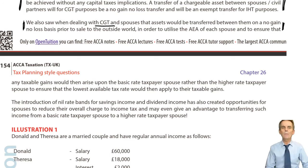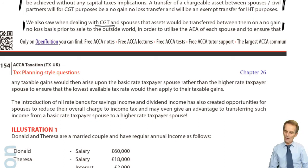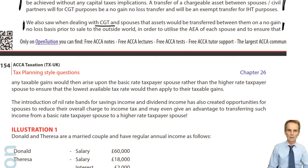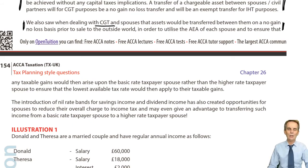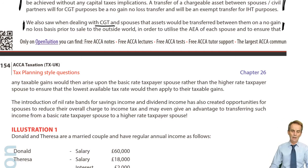We could change the CGT rate from 20% down to 10%, or maybe 20% down to 0%, because just as we have a personal allowance in income tax — a level of tax-free income — so too do we have an annual exempt amount in CGT: a level of tax-free gains. But we'll see more about that when we look at chapter 12.